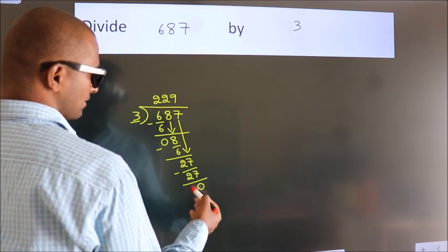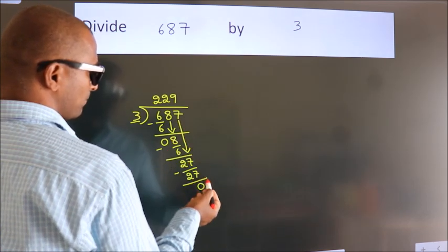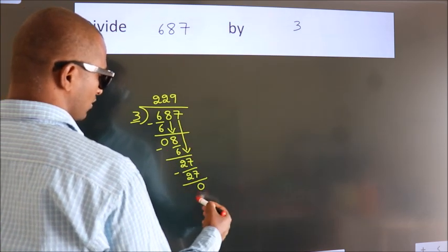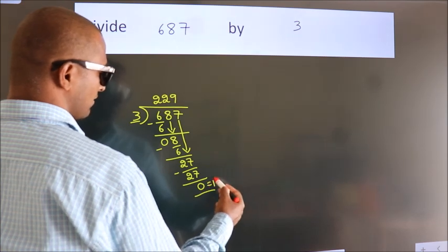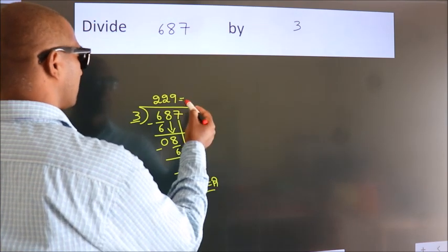After this, no more numbers to bring down. So we stop here. This is our remainder. This is our quotient, it is our answer.